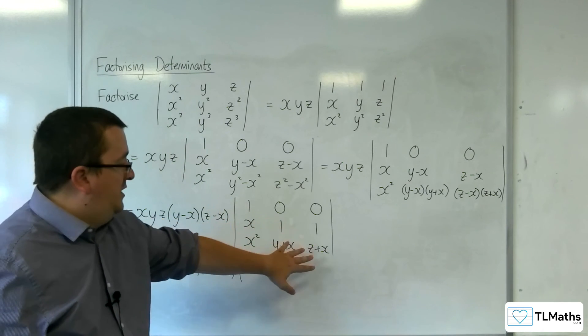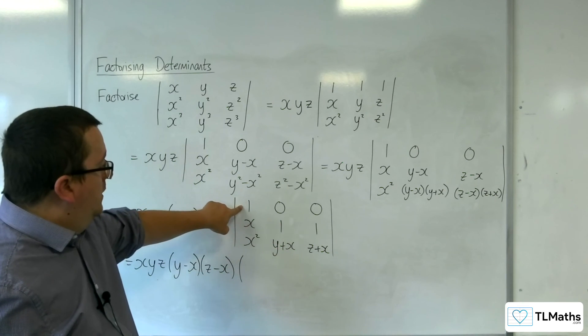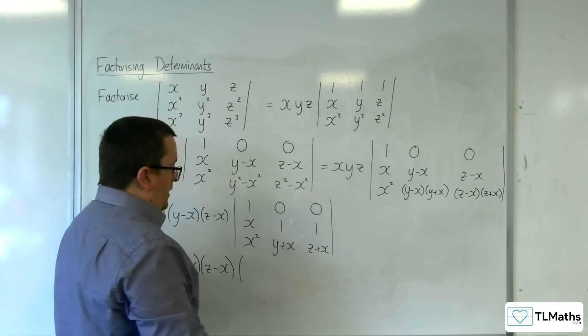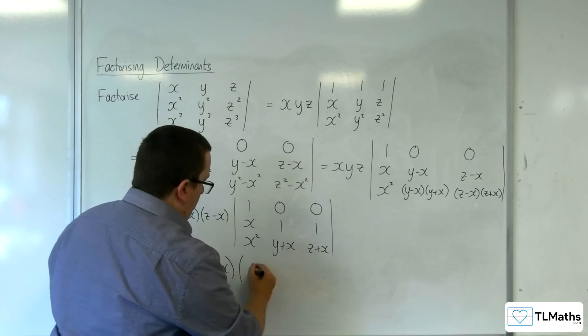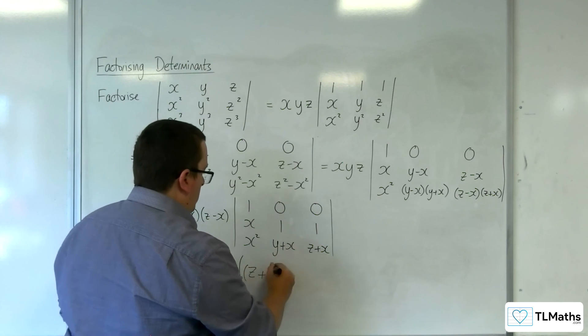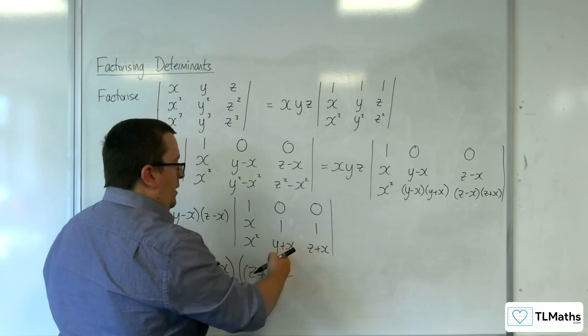Then the determinant of this is just going to be 1 times this 2 by 2 matrix, which is 1 times z plus x take away 1 times y plus x.